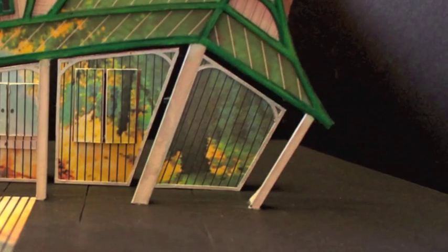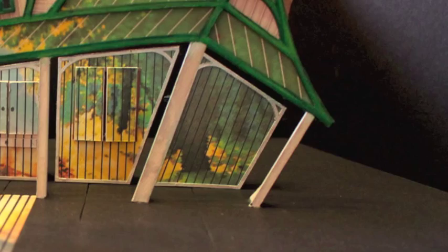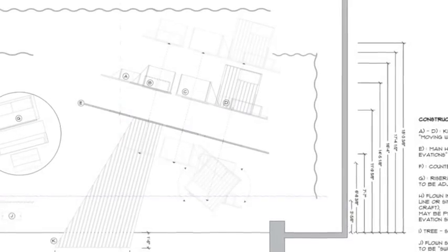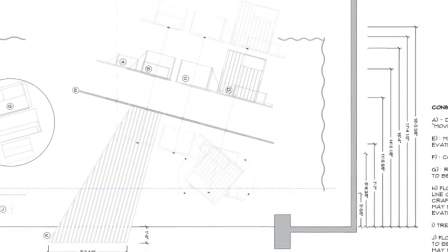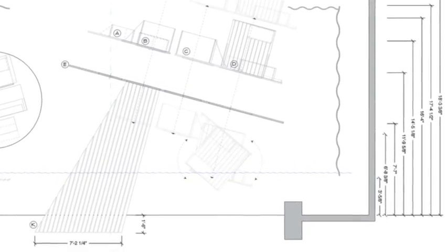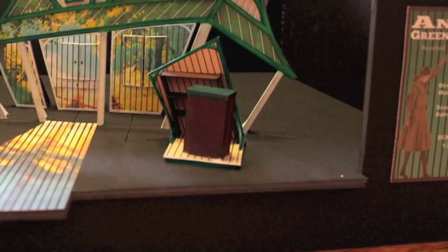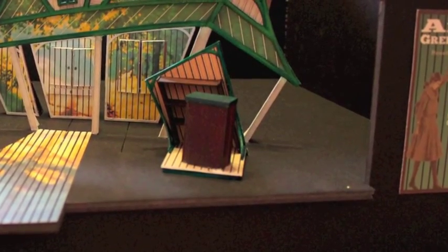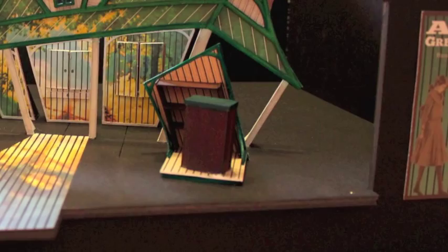Furthest stage left is the general store. This special section not only moves up and downstage, but also rotates to reveal a platform with a small counter and shelf dressed with goods.